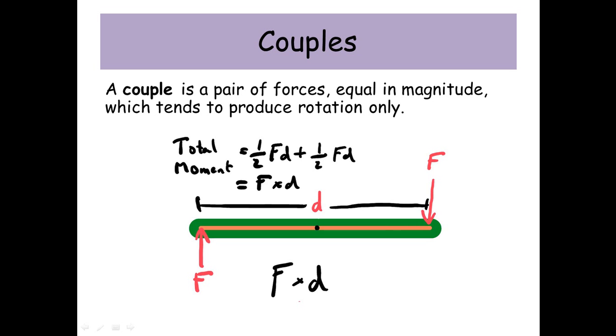We get this equation: F times D. Often it's written as F times S as well. This is the size of one of the forces in Newtons times the distance between them in meters.